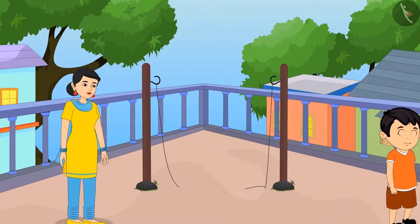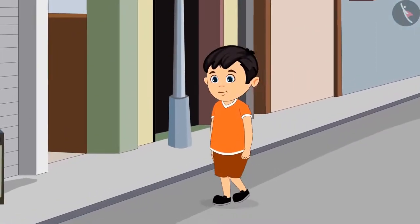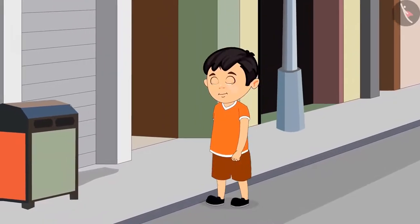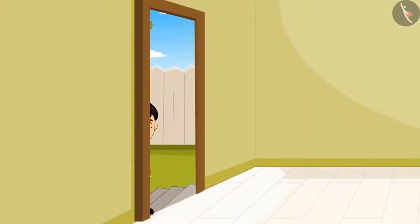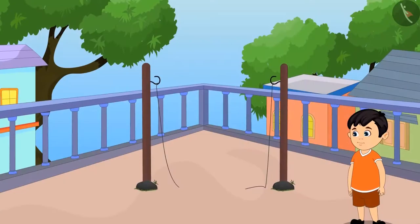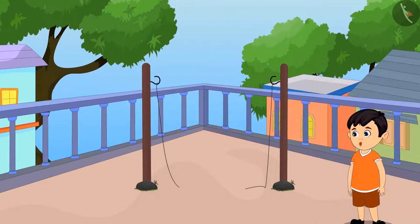Chotu goes to the market to buy rope, but he remembers on the way that he does not know the length of the rope he has to buy. He comes back home again and thinks, 'I will do one thing — I will measure the distance between the two poles using my foot, and according to the distance, I will bring the rope.'